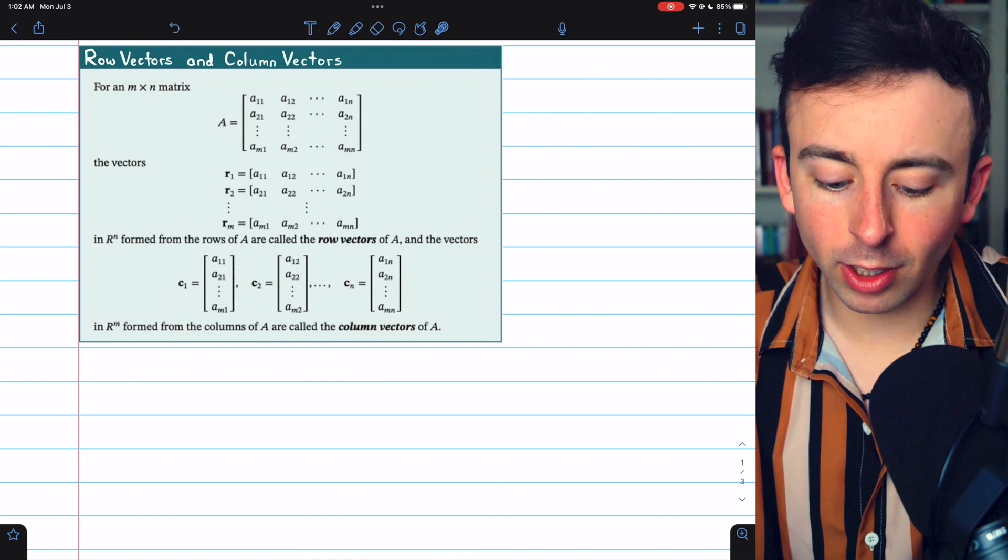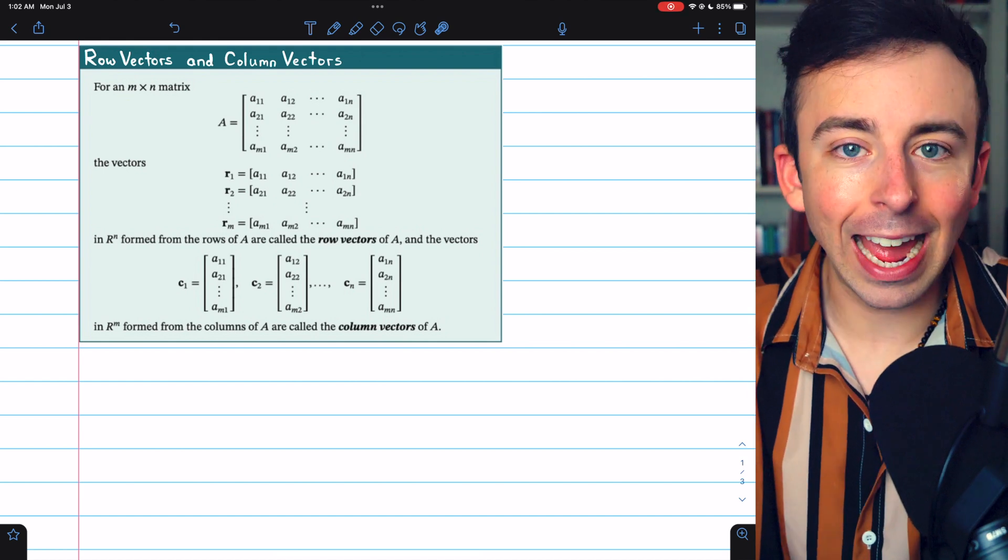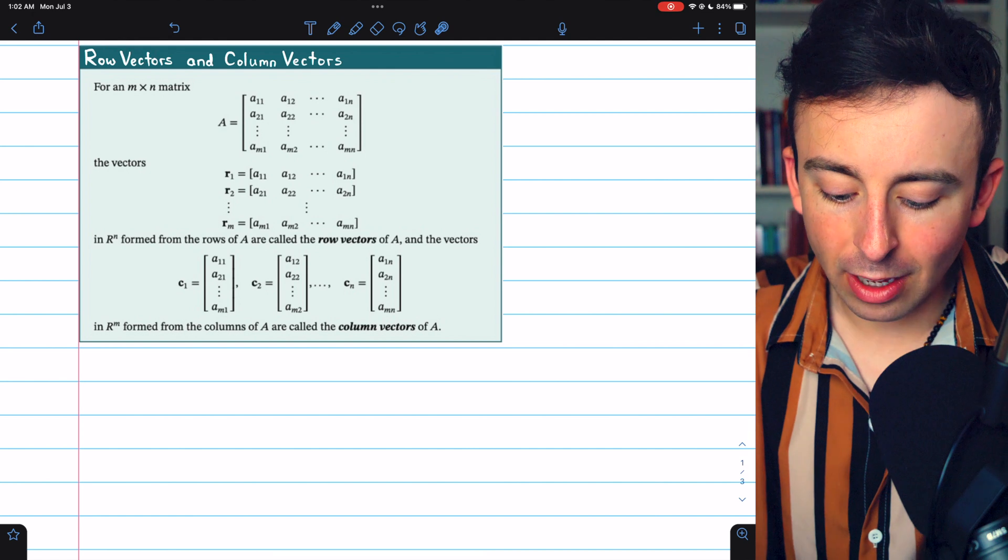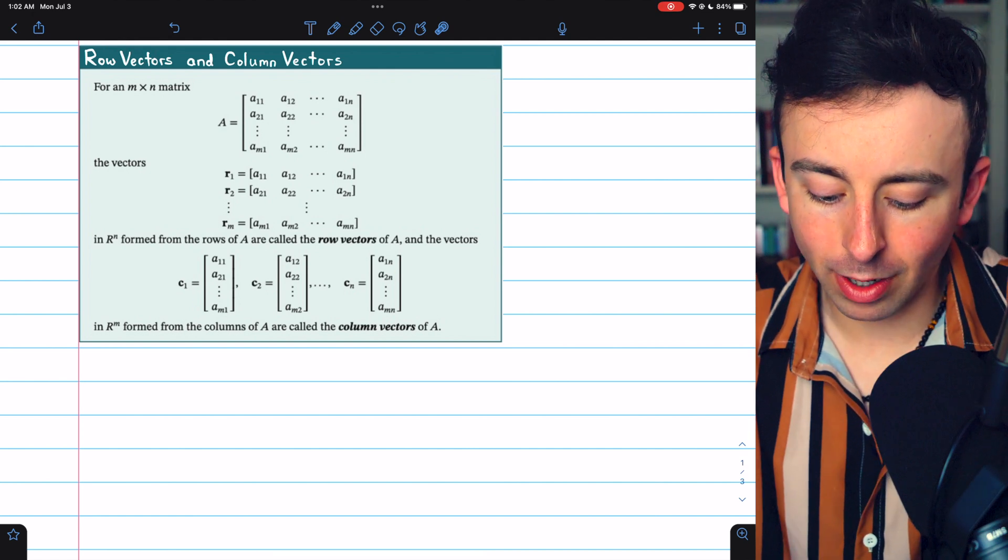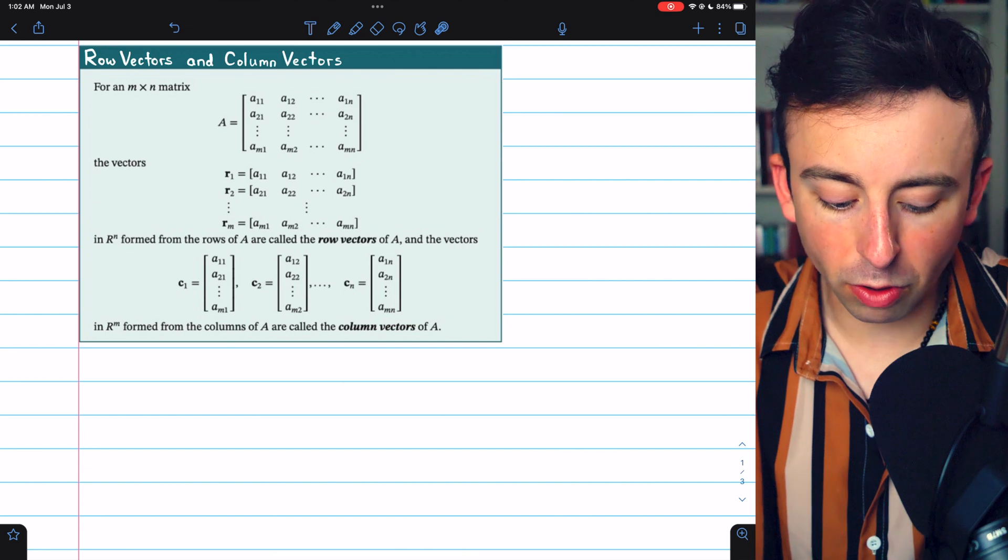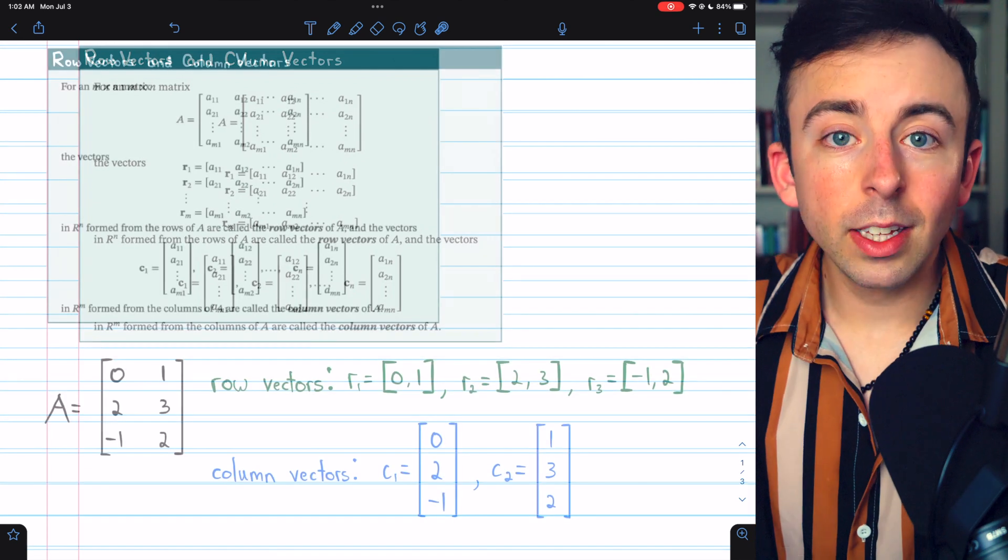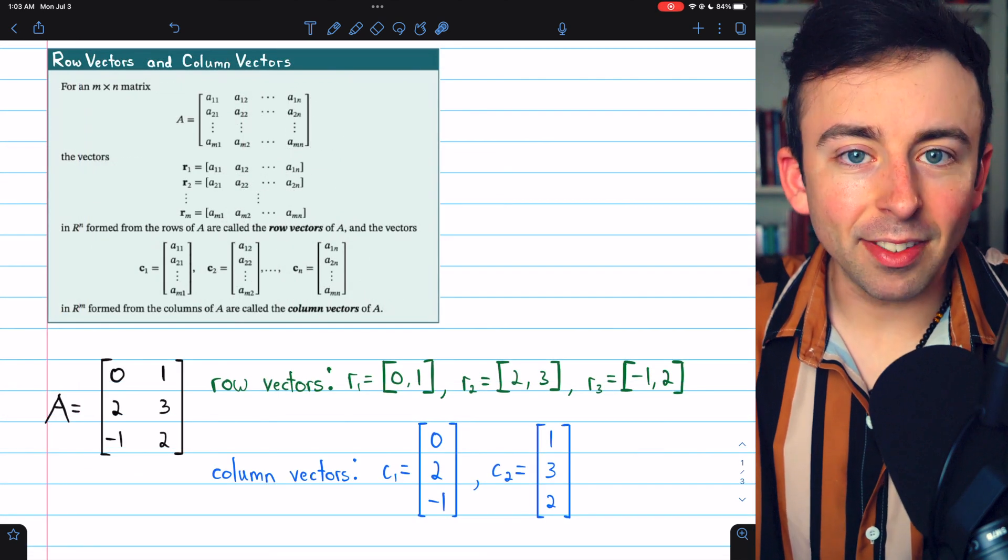Which is why the row vectors are in Rn. On the other hand, each column would have m entries, the number of rows, so the columns of the matrix make up the column vectors, and those are in Rn. The definition then is exactly as you would expect.